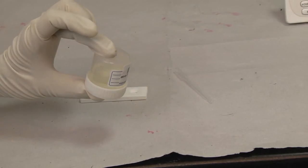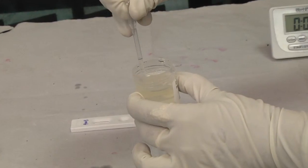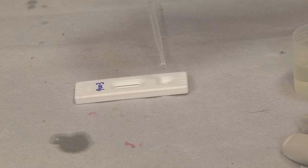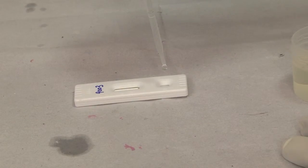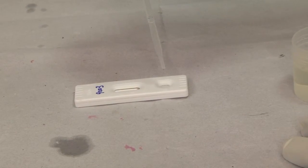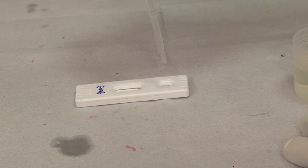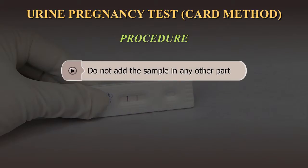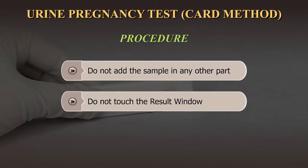Mix the urine sample by inversion and collect it with the dropper provided. Add exactly the number of full drops recommended by the manufacturer into the sample window. Do not add the urine sample in the result window marked C and T or any other part of the test device. Do not touch the result window of the test device.